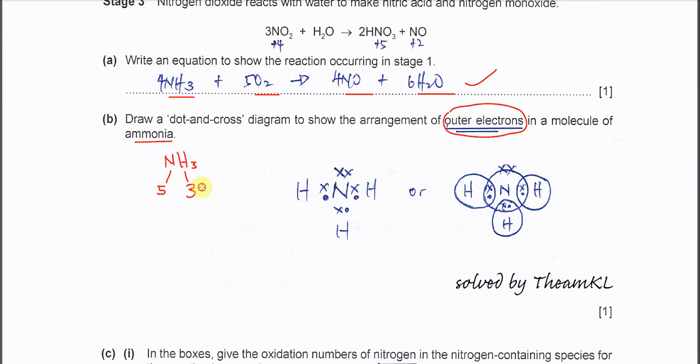So you must make sure your dot-and-cross diagram total outer electrons is eight. Nitrogen has five valence electrons, so it's going to share three of the electrons with the hydrogen.